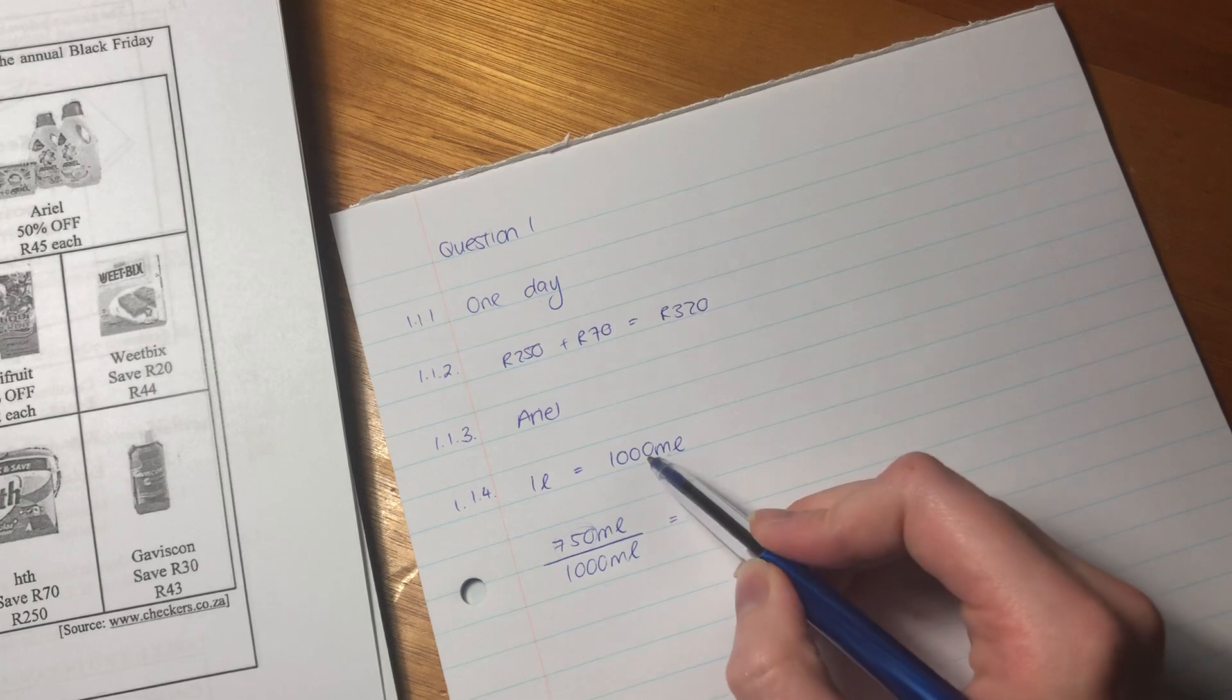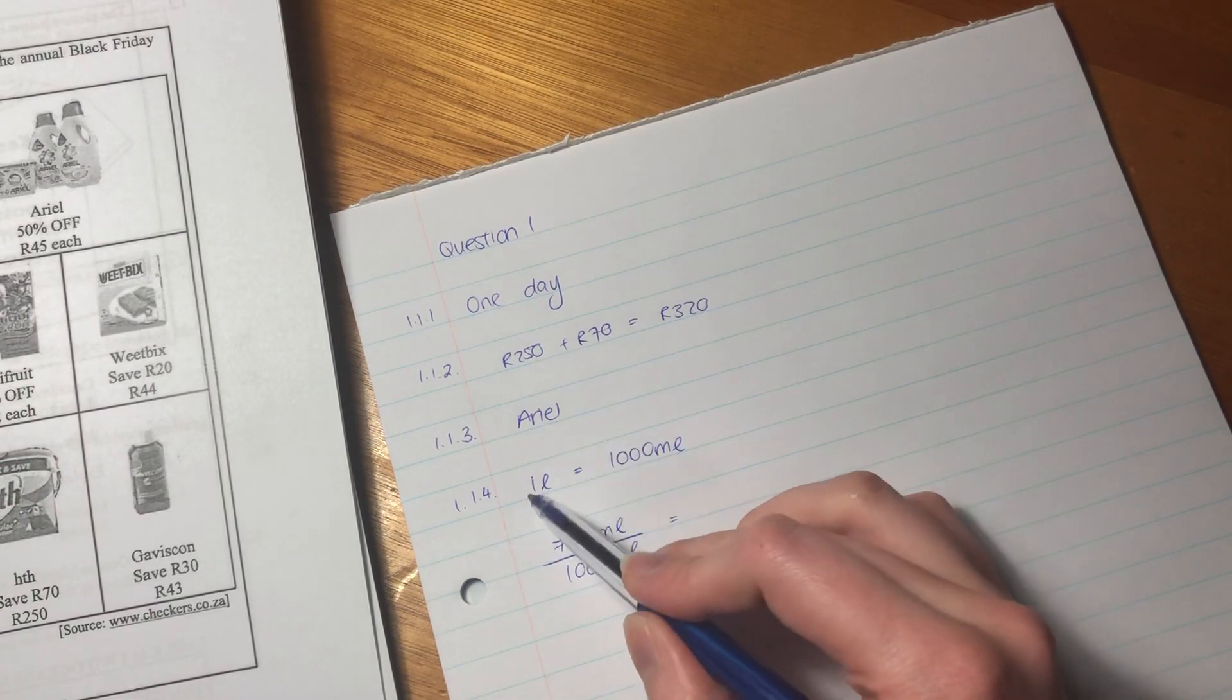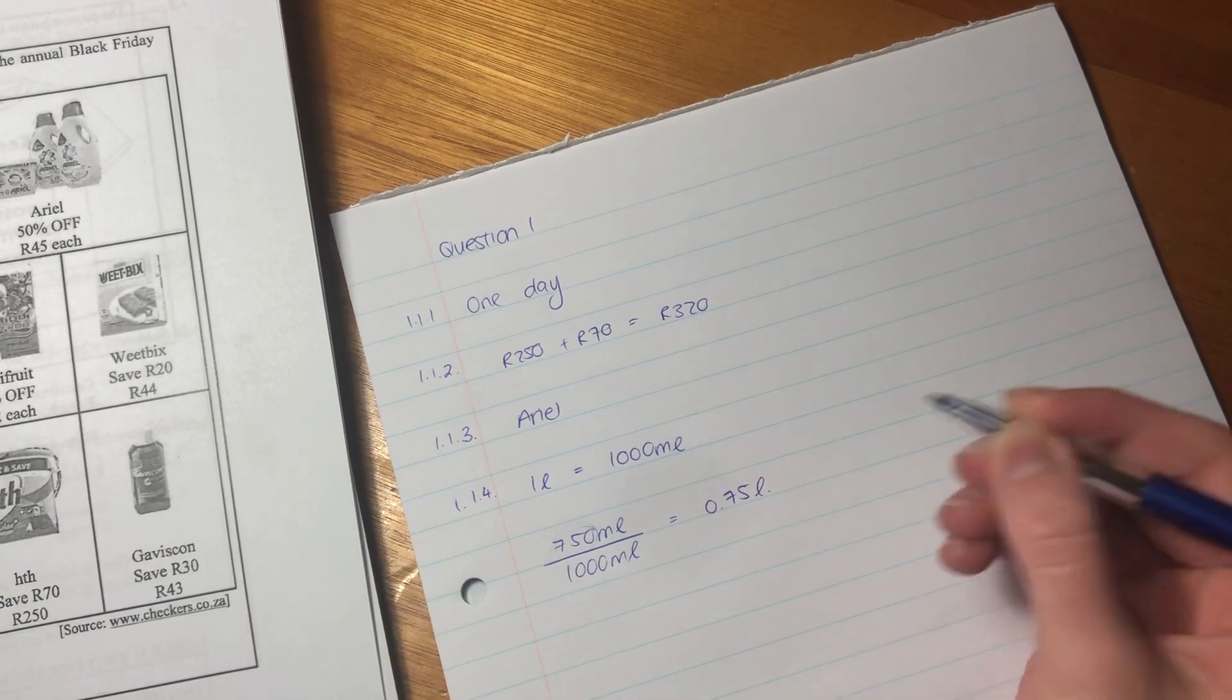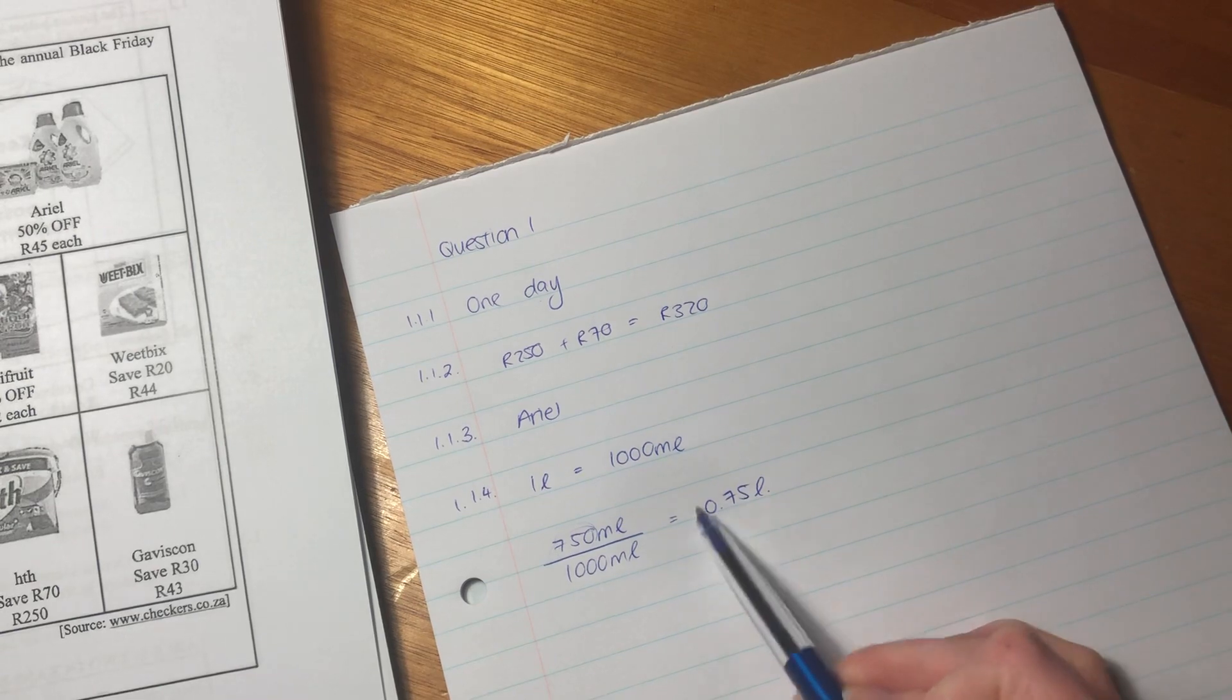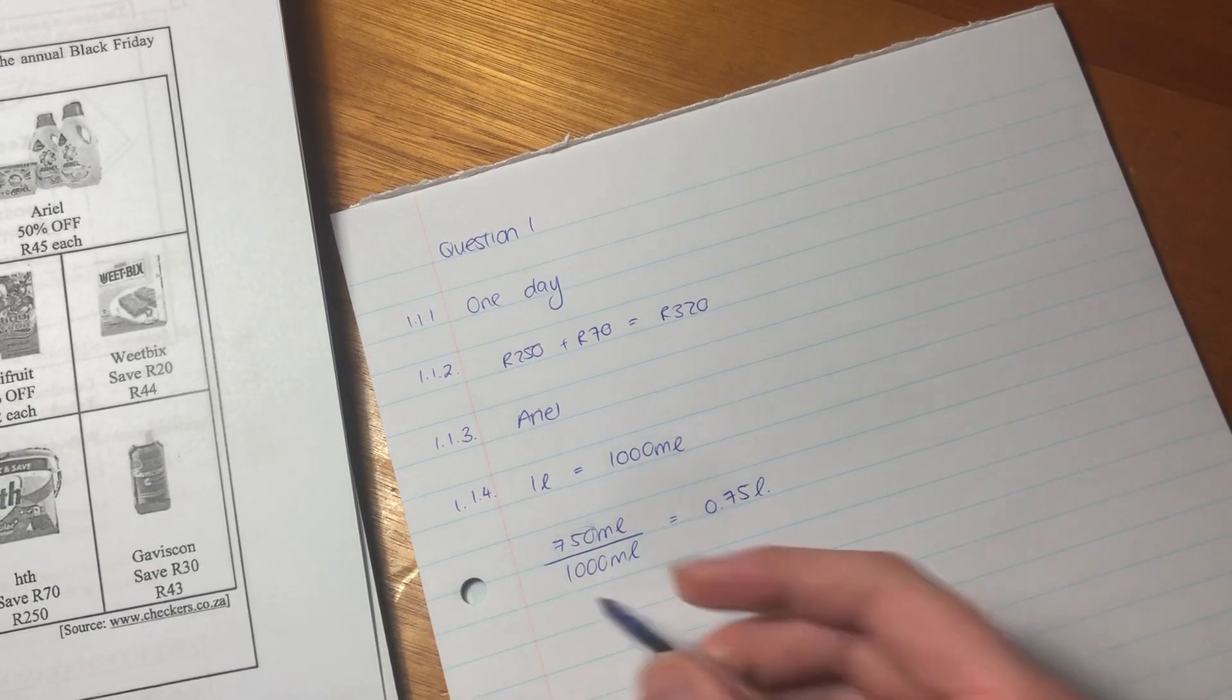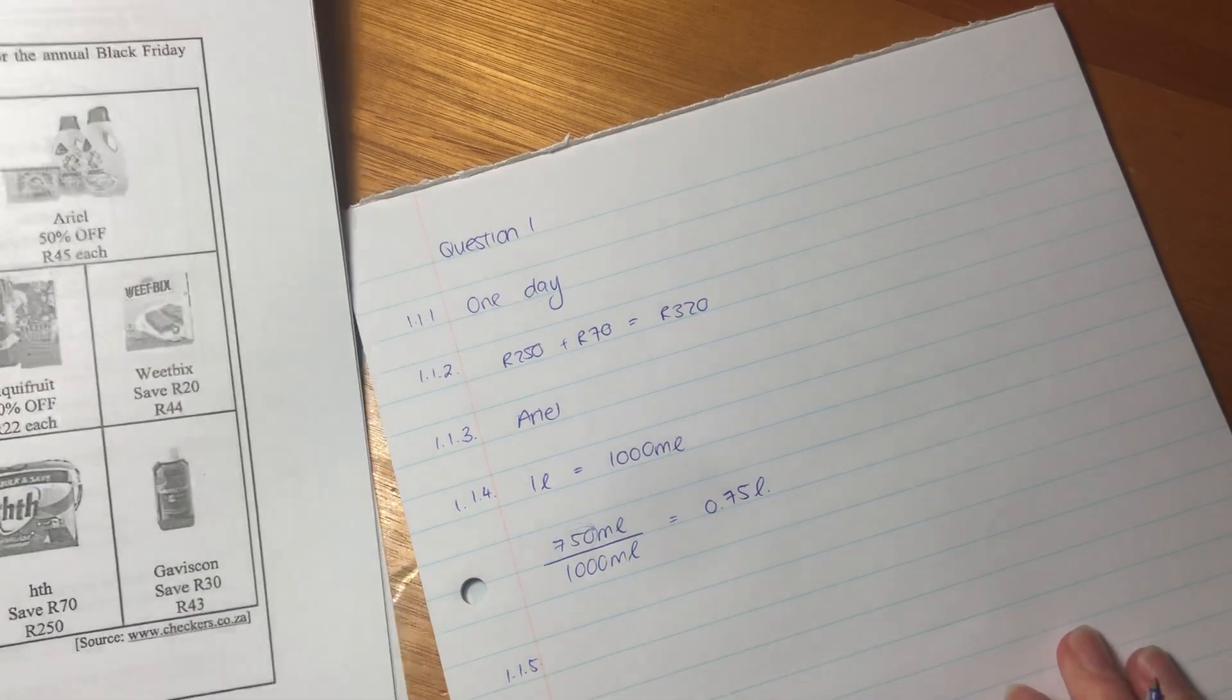Put that into your calculator and you'll get this answer: 0.75 liters. You see that 0.75 is less than 750. It's a good way of checking.